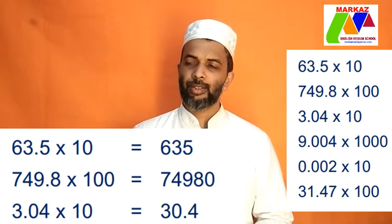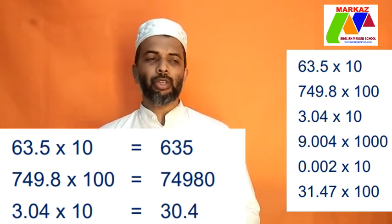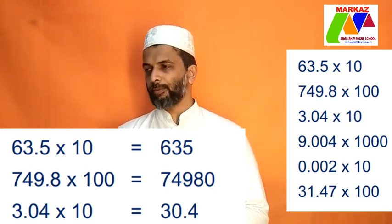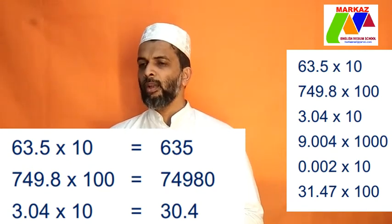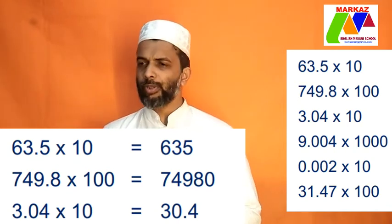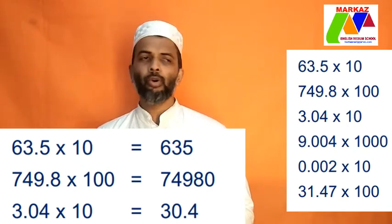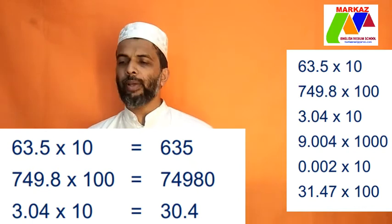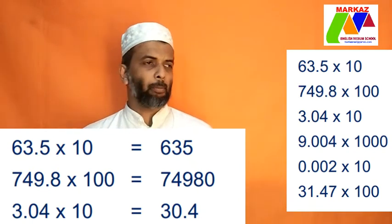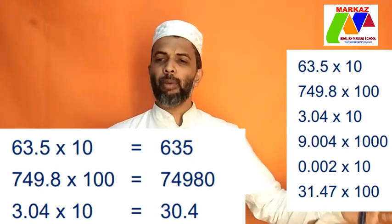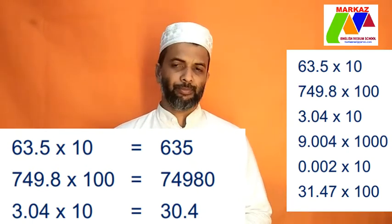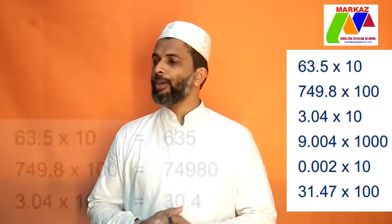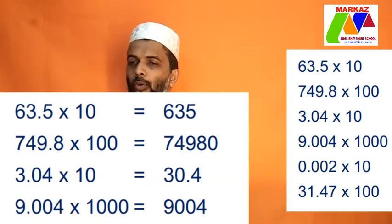Next, 9.004 into 1000. When multiply with 1000, move three decimal places before the decimal point. So, answer is 9.004.